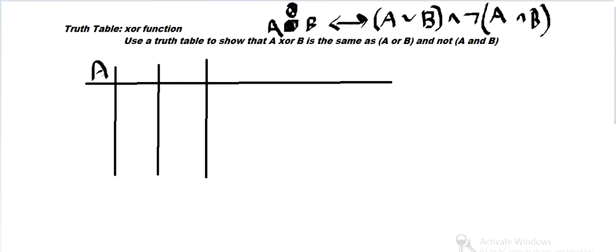And we want to show, using a truth table, that this is true. So, this exclusive OR is the same as A or B, and not A and B.